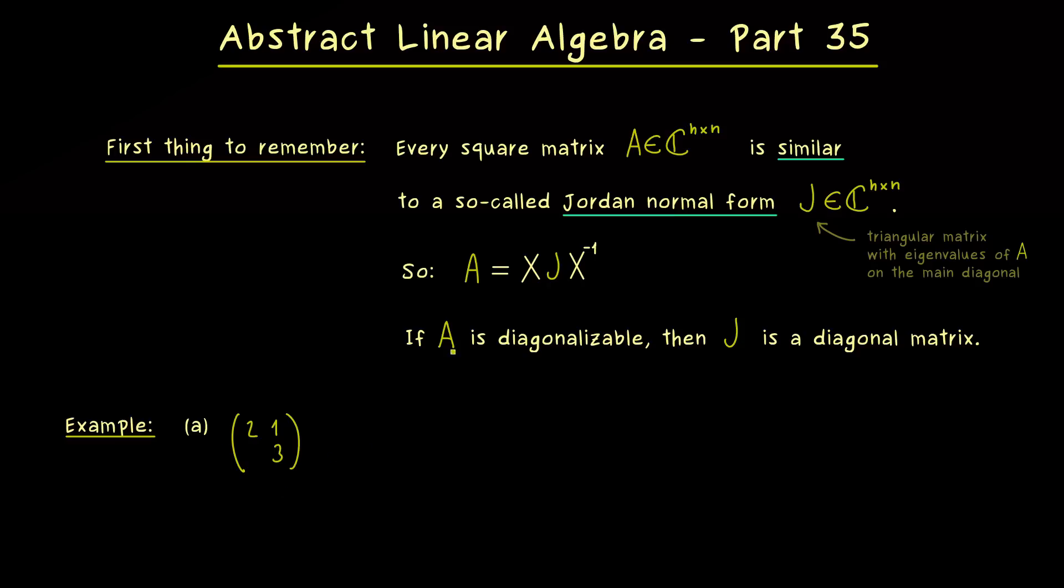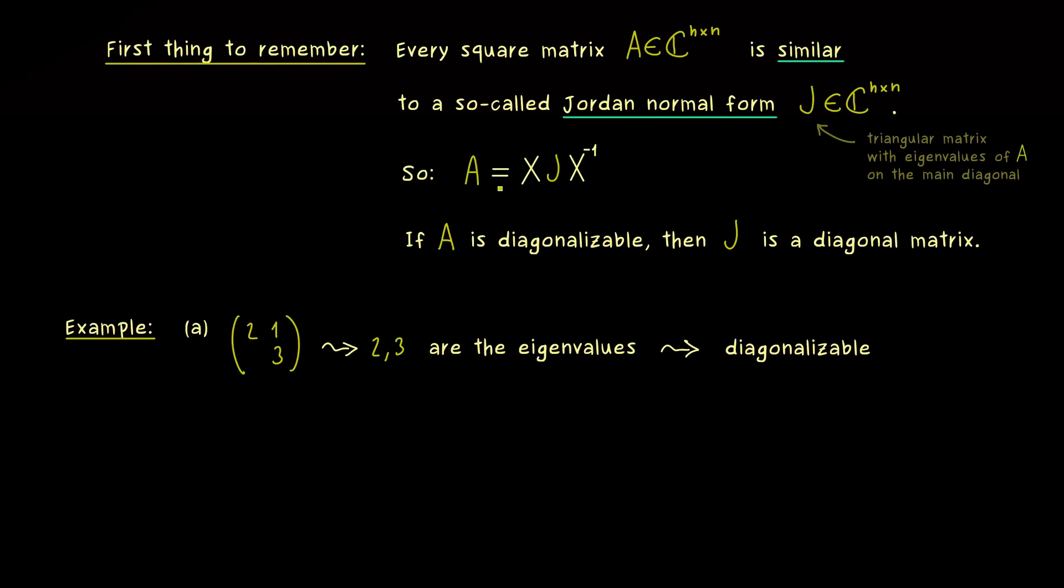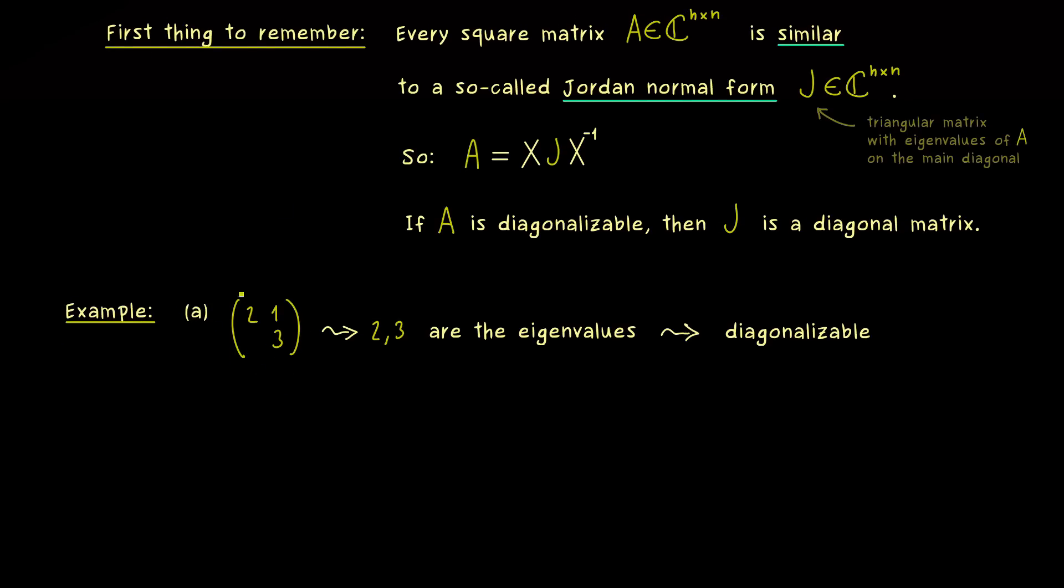Now, this is not a diagonal matrix, but we immediately see that 2 and 3 are the eigenvalues of that matrix. So we have two different eigenvalues for a given 2 times 2 matrix. And this implies we can form a basis consisting of eigenvectors and therefore the matrix is diagonalizable.